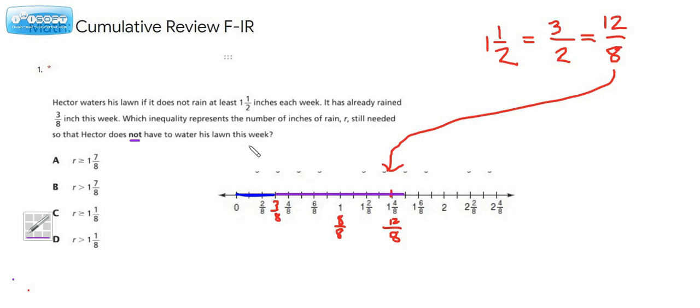I think it's a really good idea to map this out on the number line. Now, if we map out, let's rethink everything as eighths because I think that will make this problem a little bit easier. If we rethink this first as an improper fraction, that would be equal to three-halves. And if we change it to eighths, that would be equal to twelve-eighths. So that would be this red little mark that I have here on our number line because this is all broken up into eighths.